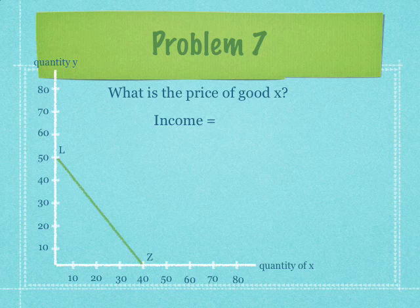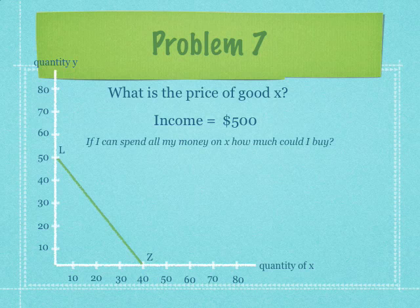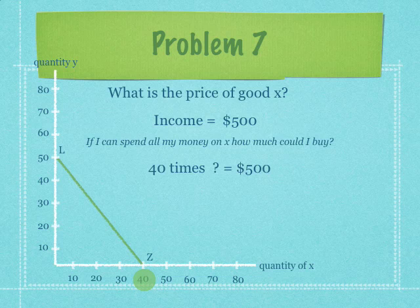So what is the price of good x? Now we know that income equals $500. In other words, if I can spend all my money on x, how much could I buy? We know they could buy 40 maximum, so 40 times something equals $500. So $500 divided by 40 equals $12.50.